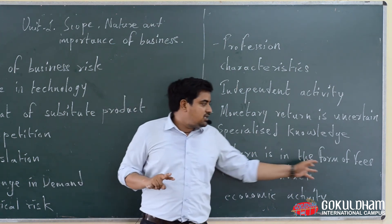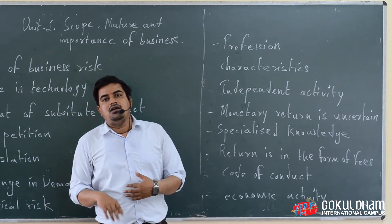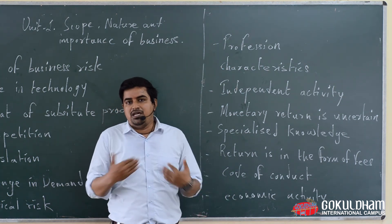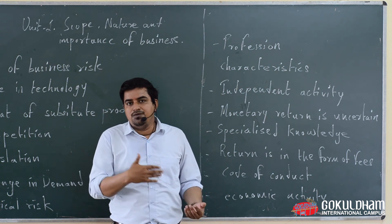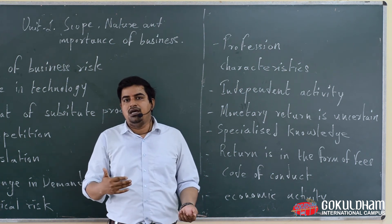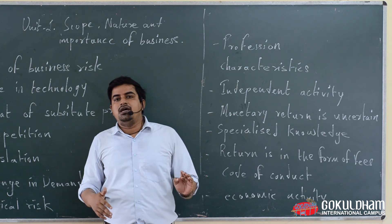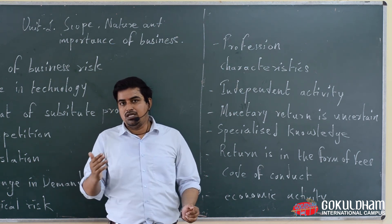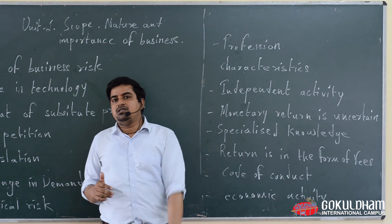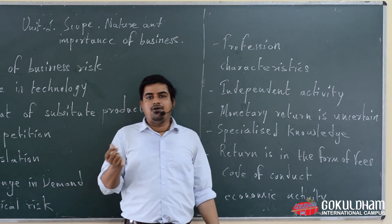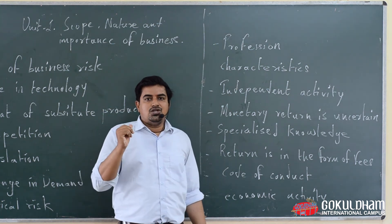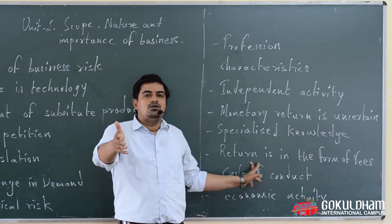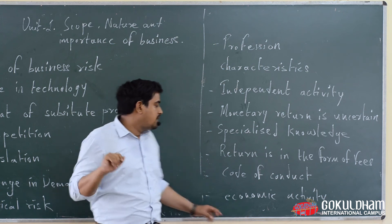The fourth characteristic is that the return in profession is in the form of fees. Whether it is an advocate or a chartered accountant, they charge fees for the service they provide. Profession एक service oriented activity है जिसमें कोई व्यक्ति आपको सेवा देता है, और उस service के return में वो fees charge करते हैं। So in profession, the return is in the form of fees.